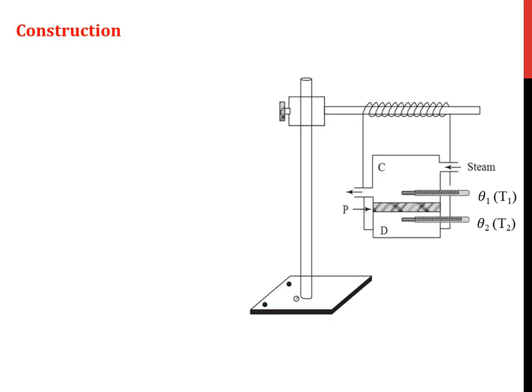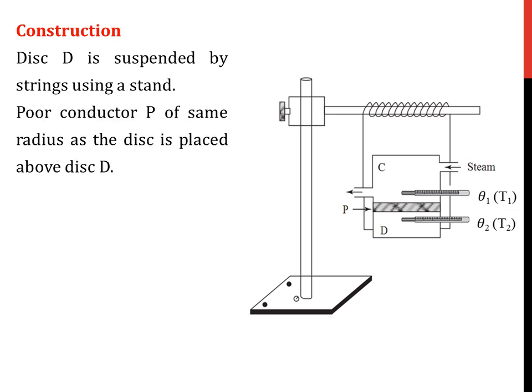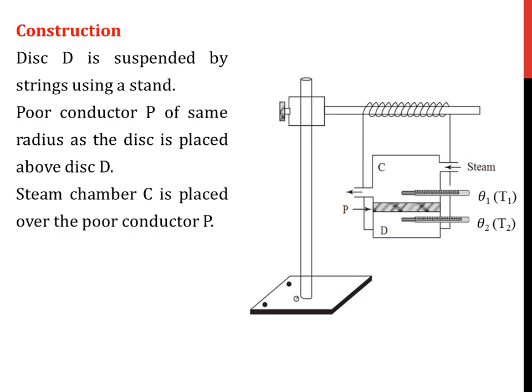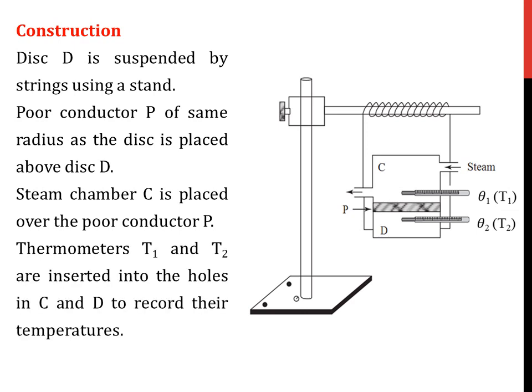All these components are now put in a perfect order to perform the experiment. The metal disc D, or the Lee's disc, is strung by means of twine using a stand. On top of this, we place the poor conductor P which has the same radius as the disc. Above that, the steam chamber C is placed. Finally, we insert the thermometers T1 and T2 into the steam chamber as well as into the metal disc in order to measure the steady state temperatures θ1 and θ2 of the steam chamber and metal disc respectively.